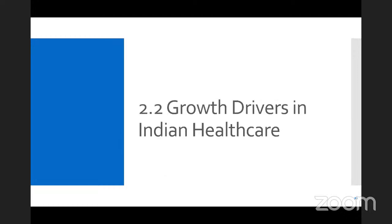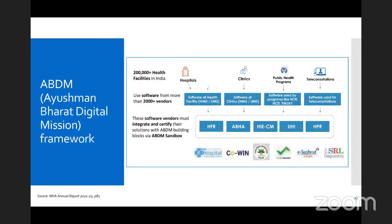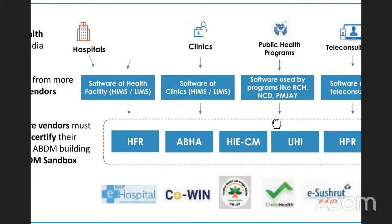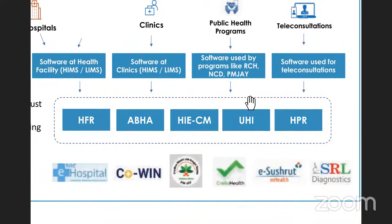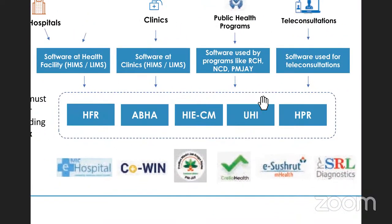Now let's look at another subsection of section two: growth drivers in Indian healthcare. I want to jump into ABDM — Ayushman Bharat Digital Mission — and talk about its main modules. There are five main modules as part of ABDM: two registries called HFR and HPR, plus ABHA, HIE-CM, and UHI.